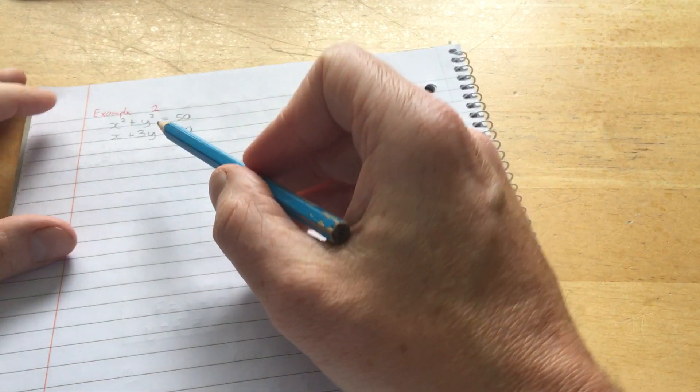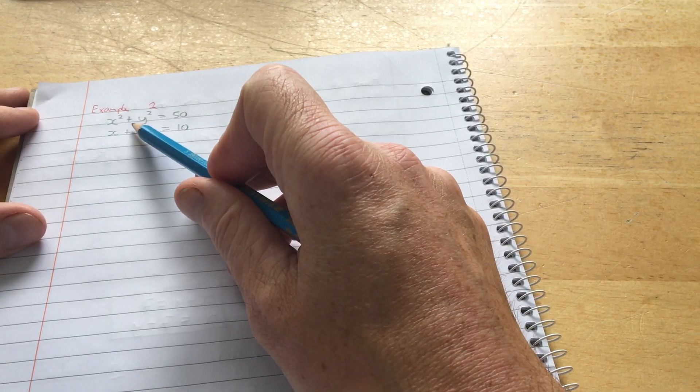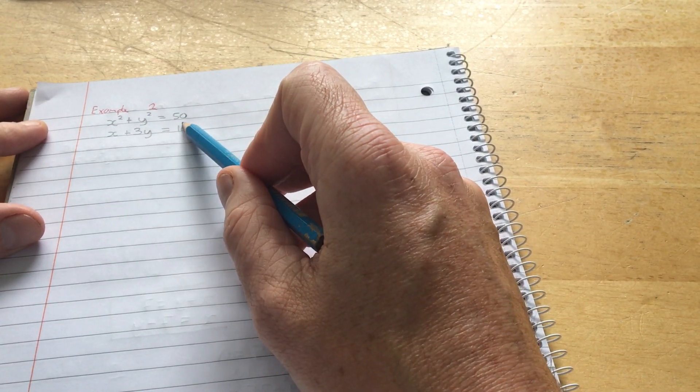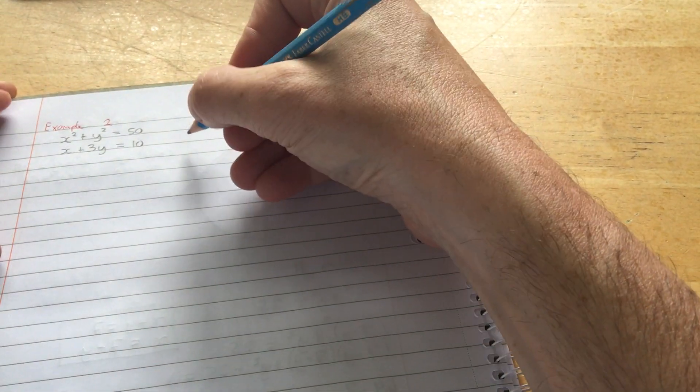I'll do another one because I know these aren't easy. Here's another. Find the points of intersection. Here's the circle and here's the line. The equation of the circle with center 0, 0 and radius the square root of 50. This is the equation of the line. I don't need to draw out any diagrams.